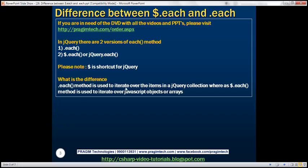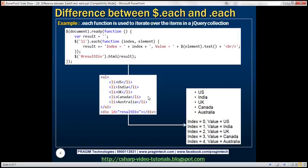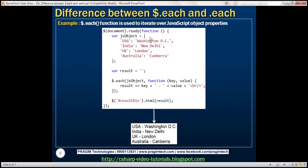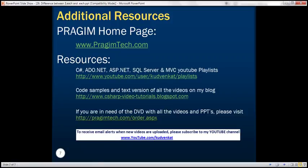In short, we use the .each method to iterate over items in a jQuery object collection, whereas $.each is used to iterate over JavaScript objects or arrays. These are the examples we discussed: the first using .each on a jQuery collection, the second using $.each on a JavaScript array, and the third using $.each on JavaScript object properties. Thank you for listening and have a great day.